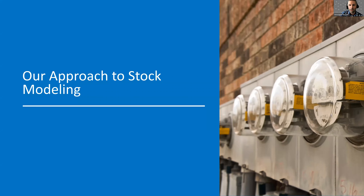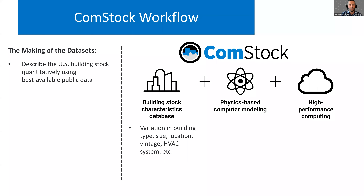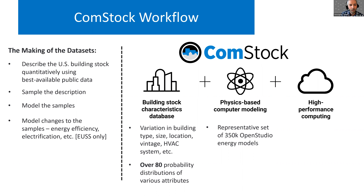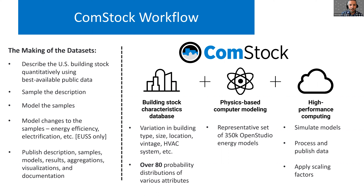Our approach to stock modeling with Comstock: we first describe the U.S. building stock quantitatively using the best available public data, allowing variation in building type, size, HVAC system, and all sorts of different attributes to reflect the variation of properties in the actual building stock. We then sample the description — for Comstock, we have over 80 probability distributions of these various attributes. We then create a representative set of 350,000 OpenStudio energy models for the Comstock baseline. For the End Use Saving Shapes project, we model changes to these samples: energy efficiency measures, electrification scenarios, and so on. We then use our high performance computing system to simulate the models, process and publish the data set, and apply scaling factors.